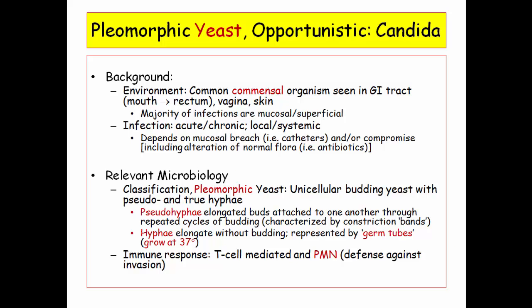Pay attention to temperatures with fungi: 25 degrees with dimorphic organisms implies mold forms, while 37 degrees with candida implies germ tubes and true hyphae. This is esoteric, so therefore they like it. As for the immune response, PMNs are the main player against tissue invasion, which explains the presence of micro-abscesses when invasion occurs — they evoke pus.